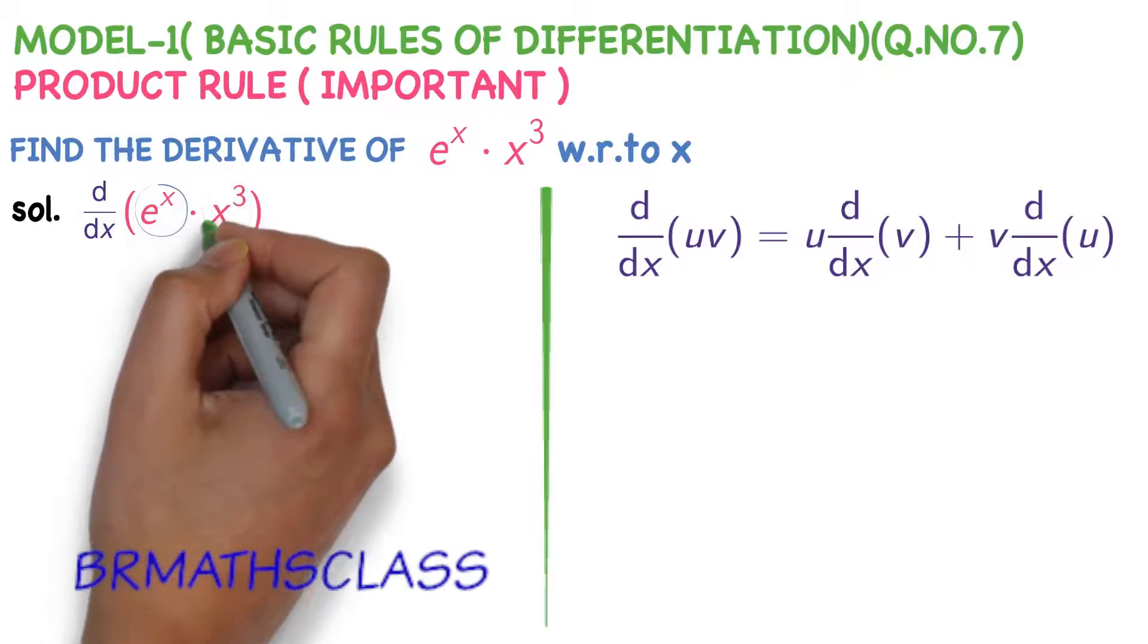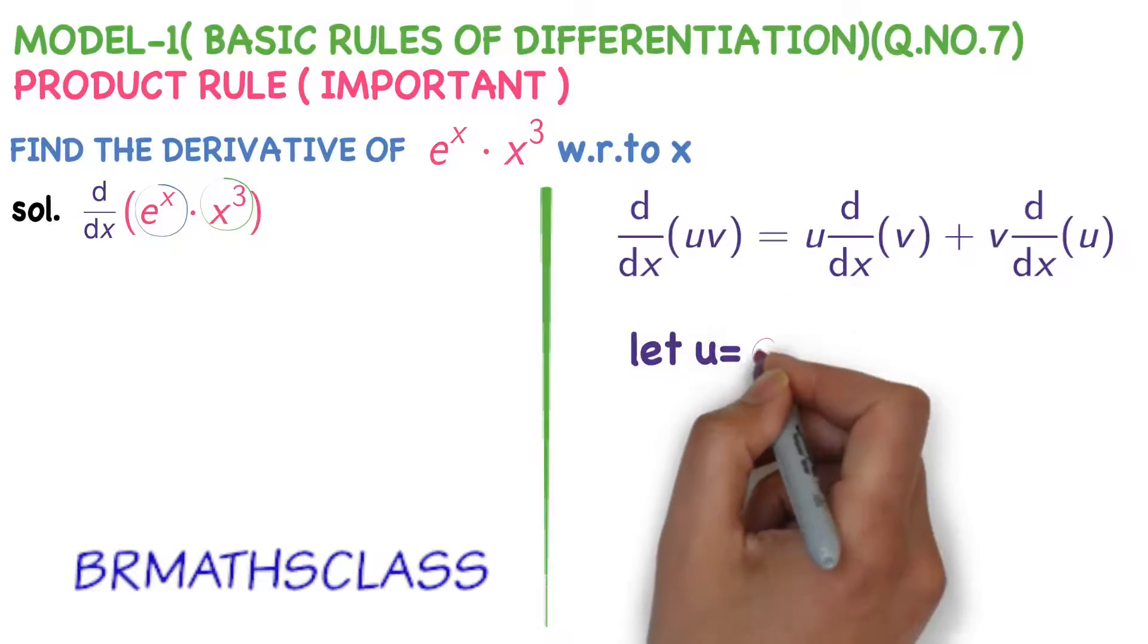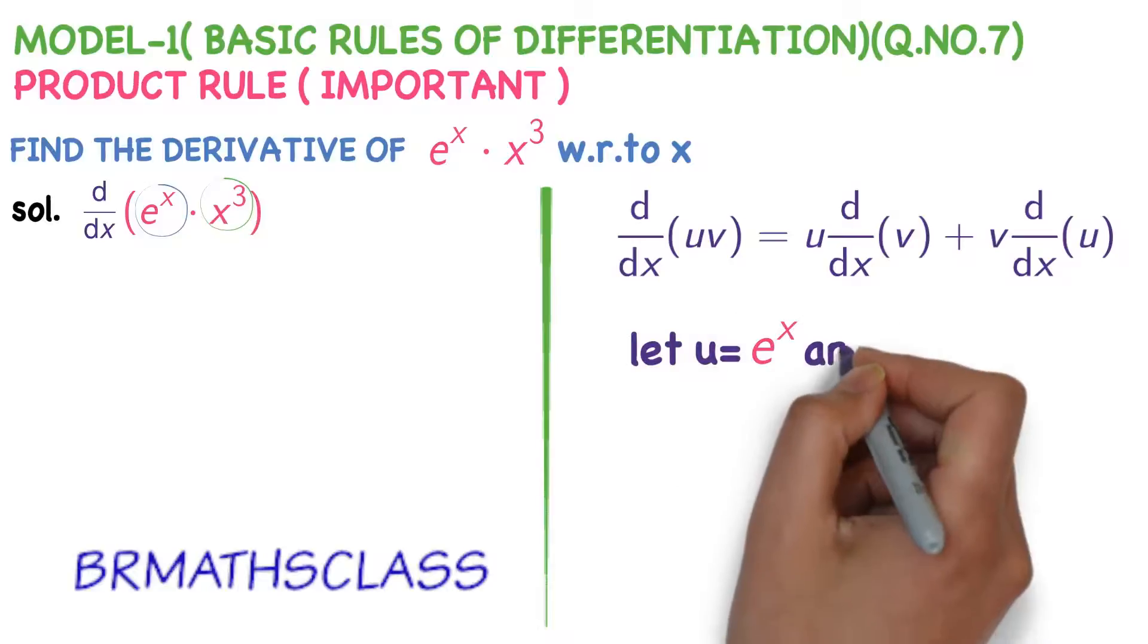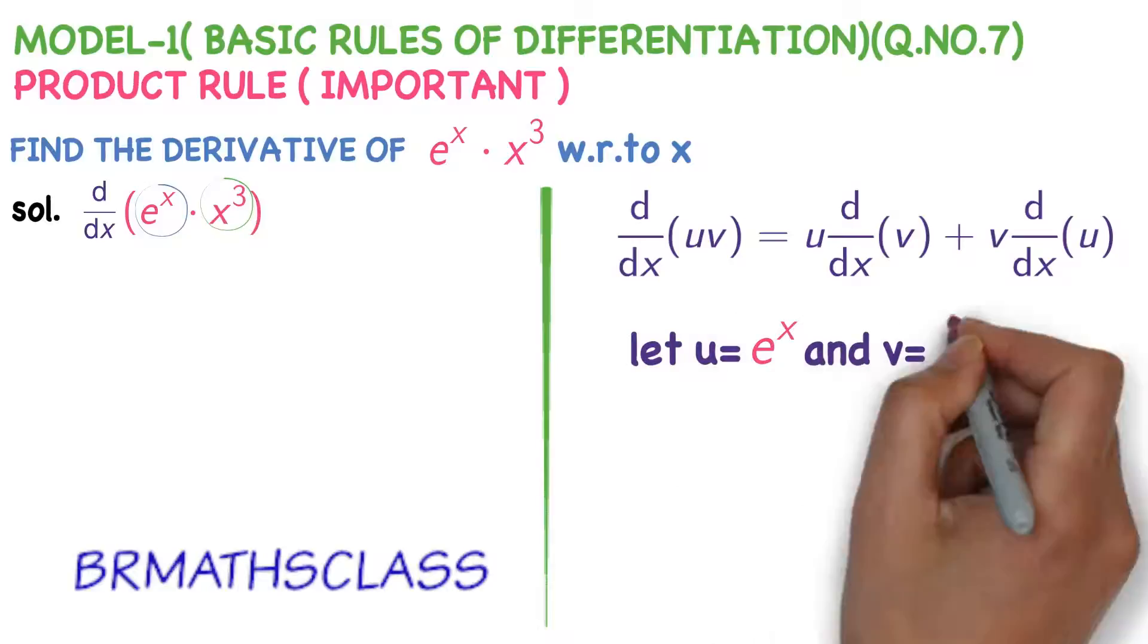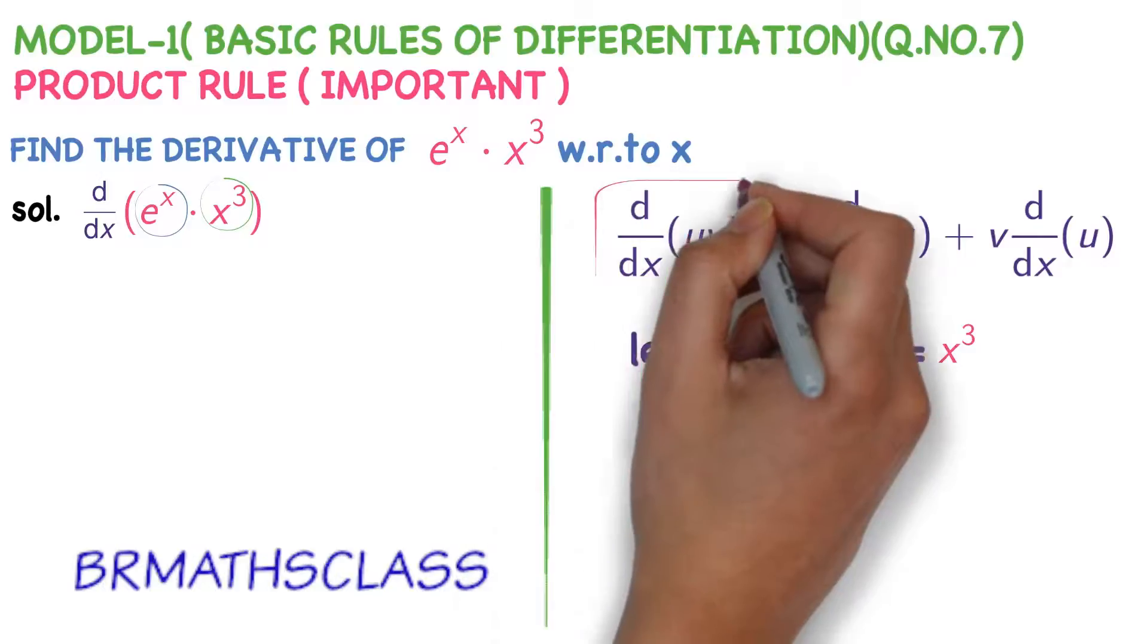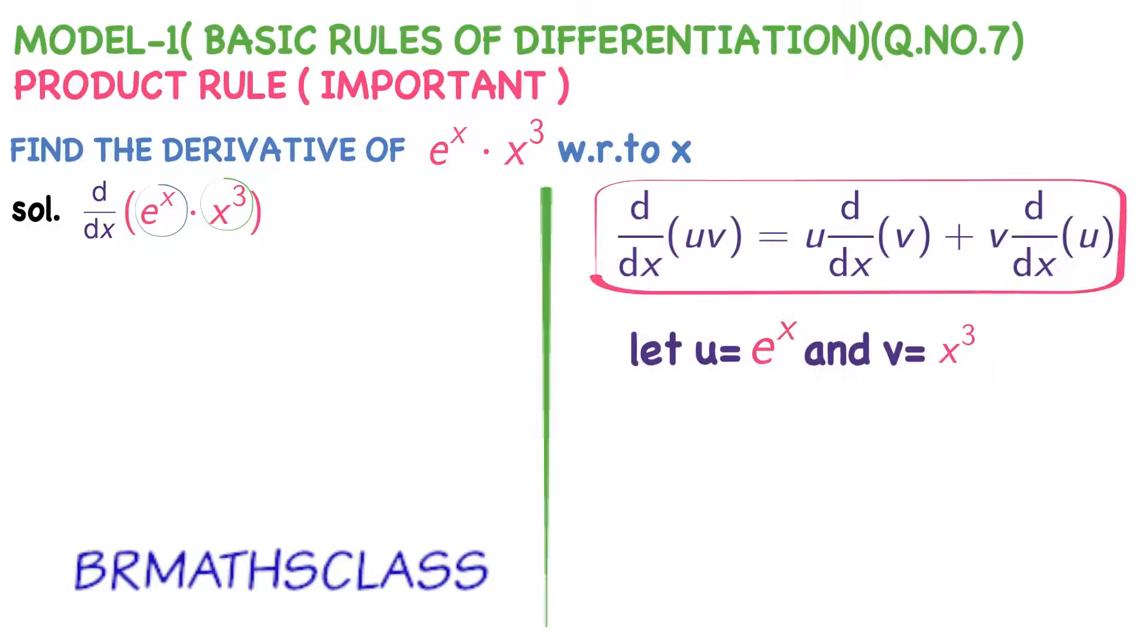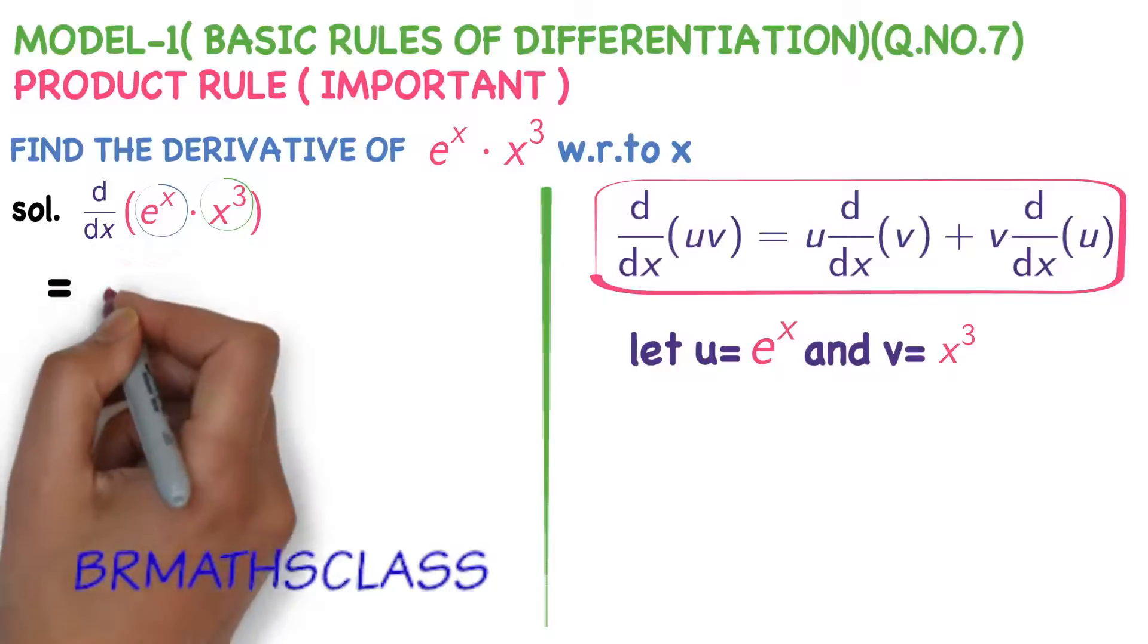d by dx of uv equal to u into derivative of v plus v into derivative of u. What is u? u is e power x. What is v? v is x cube. You can observe here. e power x into x cube. Product of two functions. Derivative of uv is u into derivative of v plus v into derivative of u. Now, let's apply this formula.